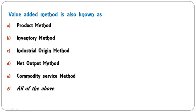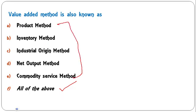Value added method is also known as: product method, inventory method, industrial origin method, net output method, commodity service method, or all of the above? The correct answer is all of the above — value added method is known by all these names.